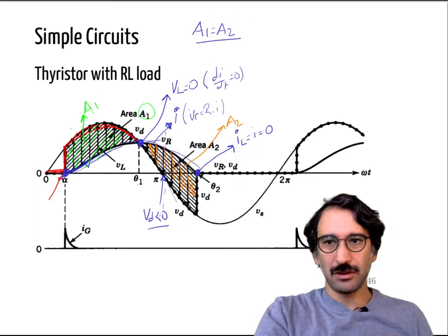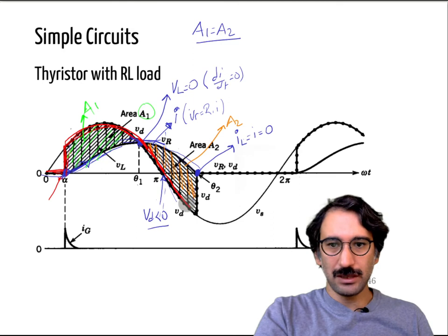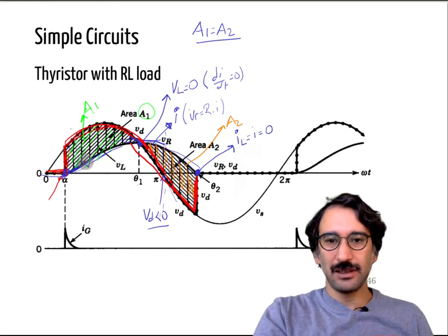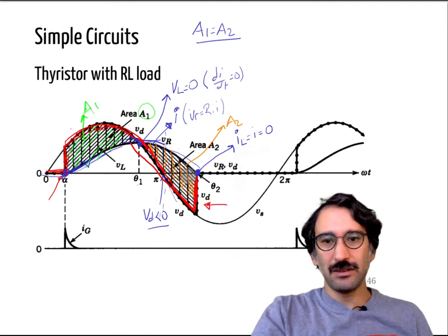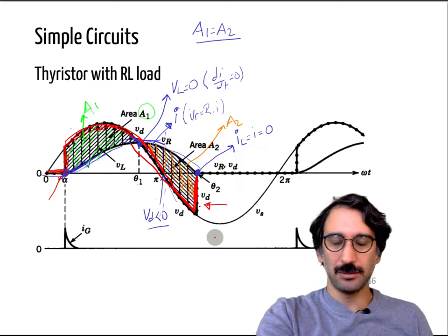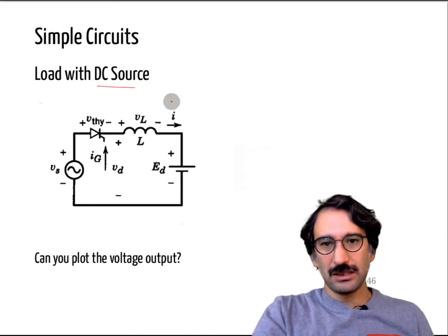We can calculate the average output voltage by integrating the voltage waveform over one cycle. The output includes a positive area and a slight negative area, so the average depends on both regions. By adjusting alpha, the output voltage average can be raised or lowered, and depending on the load, some negative voltage can appear at the output.